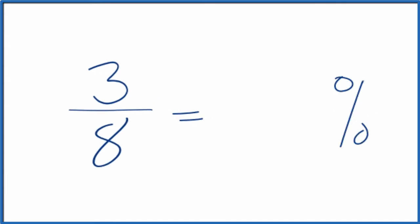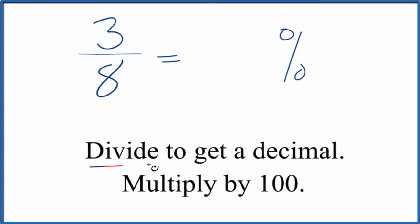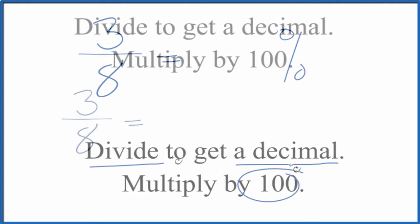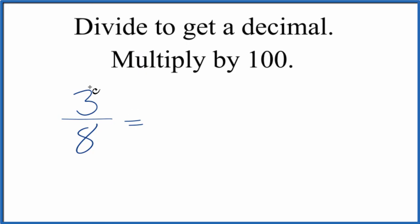The way we do this is we first divide 3 by 8, and that gives us a decimal. Then we could just take and multiply that decimal by 100. That'll give us a percent. So you can do this longhand, divide 3 by 8 longhand, or you can use a calculator.